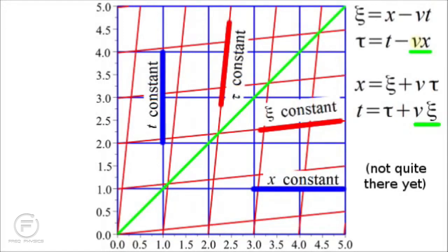To describe this mathematically, we need to add two new terms. Before, in classical Galilean relativity, we assumed everybody agreed upon time but disagreed upon spatial coordinates. Now if psi equals x minus vt, we have the symmetrical relationship that tau equals t minus vx. Correspondingly, if x equals psi plus v tau, then t equals tau plus v psi. Those new terms create that slope between lines of constant time. We now have two different time coordinates completely symmetric with respect to the spatial coordinates. Everything is symmetric about the diagonal green line, which represents the speed of light.